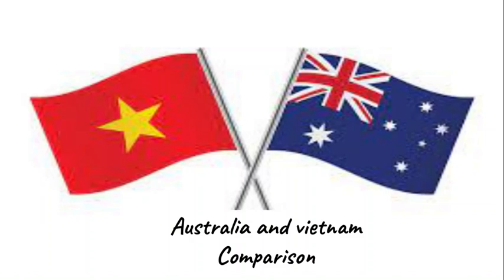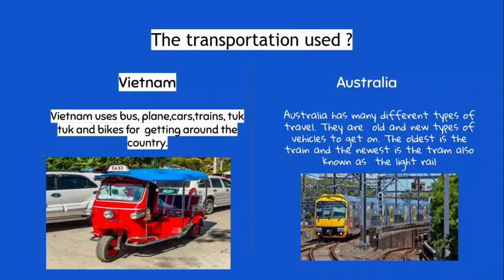Australia and Vietnam comparisons. The transportation used in Vietnam: Vietnam uses buses, planes, cars, trains, tuk-tuks, and bikes for getting around the country.